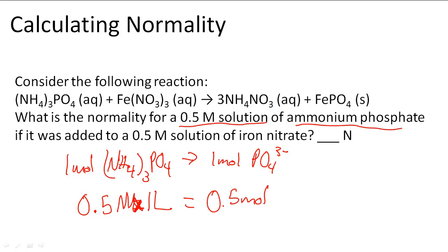So for 0.5 moles of ammonium phosphate, I'm going to get also 0.5 moles of PO4³⁻. So we know that this is the case, so then it must mean that this is 0.5 normals.